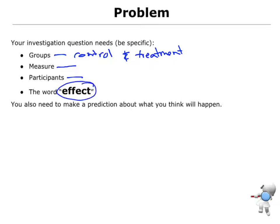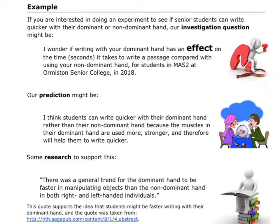The question also needs the word 'effect,' because we're talking about whether doing this has an effect on the response — for example, I wonder if pulling off my plaster has an effect on the response. I also want to think about making some kind of prediction: I think this will happen.